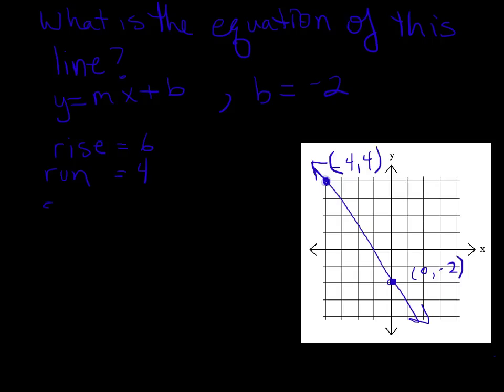And I know that my slope is rise over run, so that's 6 over 4. And as always, you want to reduce your fractions, so that's going to give me 3 over 2. So the equation of this line is y equals 3 over 2x minus 2.